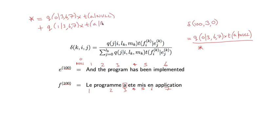and so this is position 1 in the English. I have a distortion parameter and a translation parameter plus q of 2 given 3, 6, 7 times t of a given the and and and that's how I calculate this denominator. So the denominator is essentially going to be a normalization constant, as we'll see very soon.